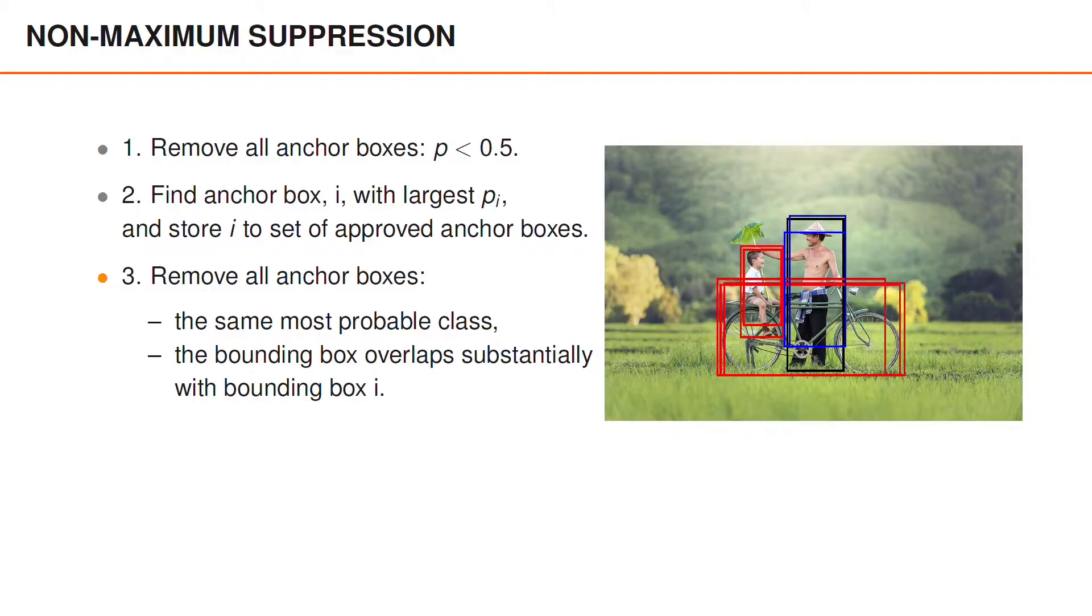After that we identify all bounding boxes that satisfy two criteria. First that the most probable class is the same as for bounding box i. Second that the bounding box overlaps substantially with bounding box i where we use intersection over union to measure the overlap. We have marked the bounding boxes that satisfy both criteria in blue. The other bounding boxes are either likely to be a bike or the overlap with the black bounding box is too small. The blue bounding boxes are then removed.